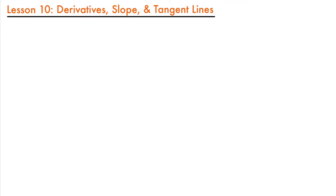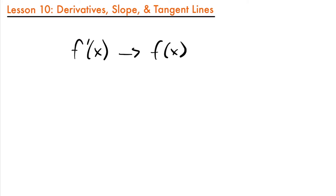Welcome back. Last time we learned how to take derivatives using some basic rules, and now that we know how to take some of those basic derivatives, we can discuss a little more about what they mean and how we can use them. This also ties back to when we talked about the limit definition of a derivative. The derivative, or f prime of x, represents the slope of a function f of x at a particular point or value of x. That is really what a derivative is — it is the slope at a particular point for a function.